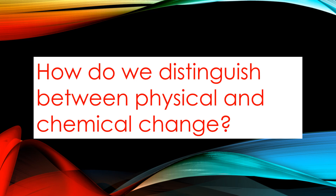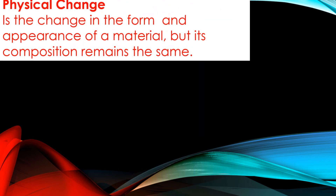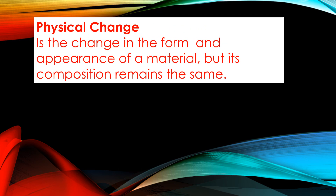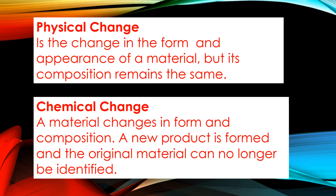How do we distinguish between physical change and chemical change? Physical change is the change in the form and appearance of a material, but its composition remains the same. While in chemical change, a material changes in form and composition, and a new product is formed, but the original material can no longer be identified.